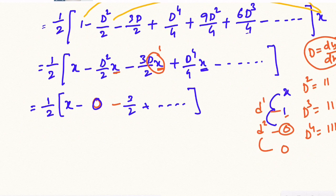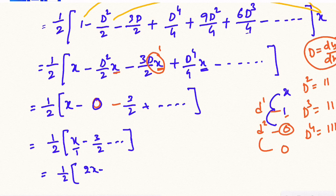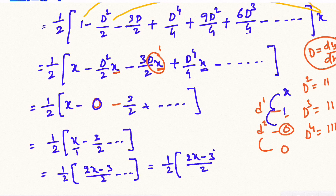So the next value simplifies to (1/2)(x minus 3/2). We need to simplify this: the value is (1/2)(2x minus 3)/2, giving the particular integral as (1/2)(x - 3/2).